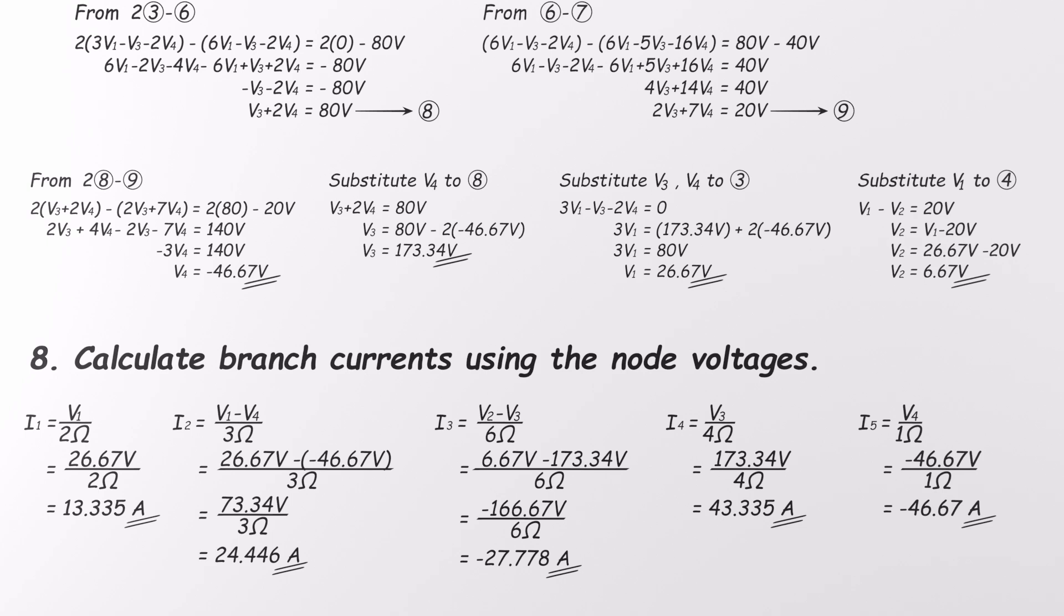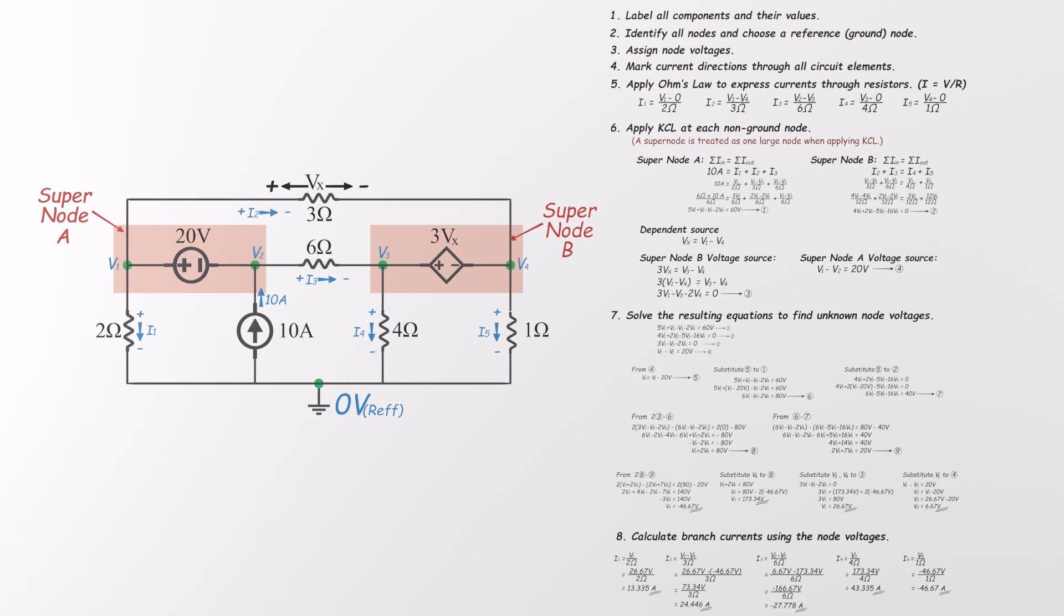And just like that, we've used nodal analysis to solve for every single branch current in this circuit. Even with supernodes and dependent sources in the mix, the process stays clear and totally manageable if you stick to the method. As you've seen, a little bit of algebra can take you a long way. That wraps it up. No matter how complex the circuit looks, if you take it step by step, nodal analysis will always get you to the answer. Thanks for watching, and I'll see you in the next one.